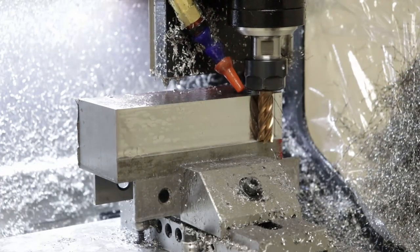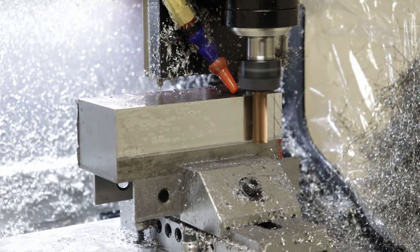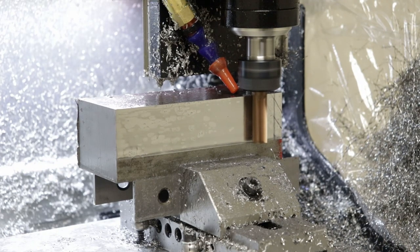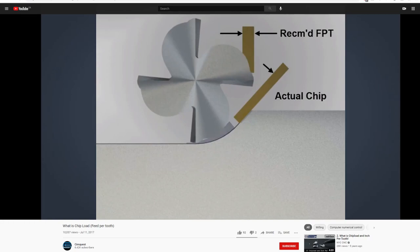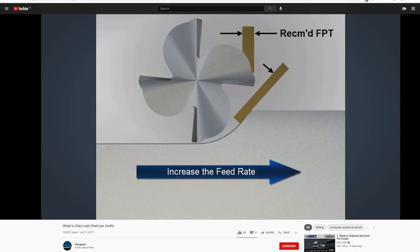Now obviously we can't always cut at 50% step over because it's often too difficult and demanding on the tool and the machine, so the solution is to do a shallow step over yes, but also to crank the feed rate way up to compensate for the smaller chip.